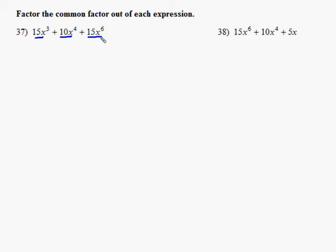So we want to look at the coefficients, the 15, the 10, and the 15, and then look at the variables. So with the coefficients, we want to think, does any number go into 15 and to 10 and to 15? And the largest number that divides into those is 5, so we can put a 5 out here.